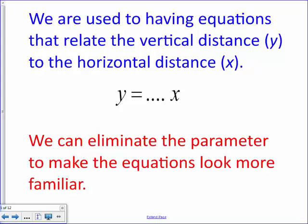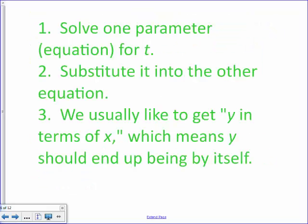But what we would like to do is write one equation that relates the vertical distance y to the horizontal distance x. And we basically eliminate the parameter to make the equation look familiar. And we always write y as a function of x, right? It's like y equals something with an x in it. So that's our goal. So what we do is we solve one of the parameters for t. And then we substitute that into the other equation. And we usually like to get y in terms of x, meaning y is by itself, like y equals something.